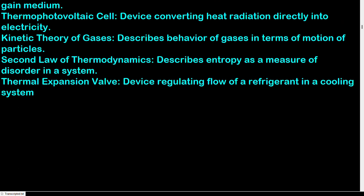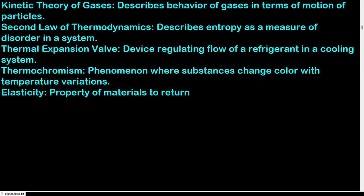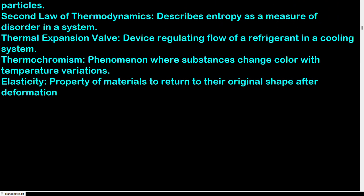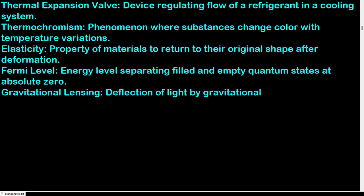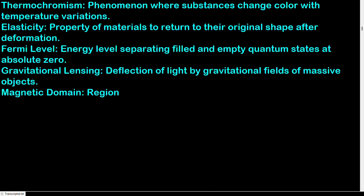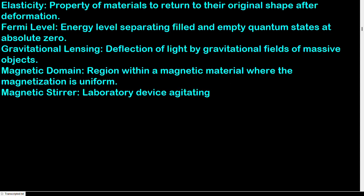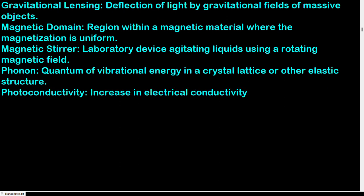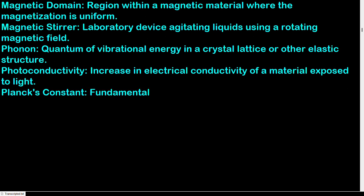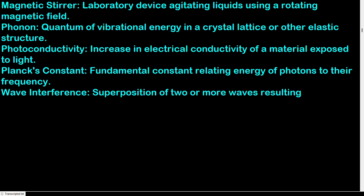Thermal expansion valve: device regulating flow of a refrigerant in a cooling system. Thermochromism: phenomenon where substances change color with temperature variations. Elasticity: property of materials to return to their original shape after deformation. Fermi level: energy level separating filled and empty quantum states at absolute zero. Gravitational lensing: deflection of light by gravitational fields of massive objects. Magnetic domain: region within a magnetic material where the magnetization is uniform. Magnetic stirrer: laboratory device agitating liquids using a rotating magnetic field. Phonon: quantum of vibrational energy in a crystal lattice or other elastic structure. Photoconductivity: increase in electrical conductivity of a material exposed to light. Planck's constant: fundamental constant relating energy of photons to their frequency.